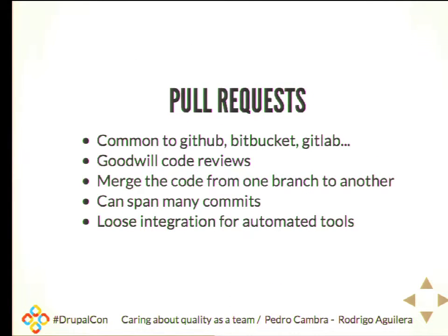Then we have pull requests. They are very popular — common to GitHub, Bitbucket, and GitLab, which is a very cool tool. What's good with pull requests for code reviews is that if you don't put any layer on top of GitHub's pull request, anyone can merge, which sometimes makes the git history a bit unclean.